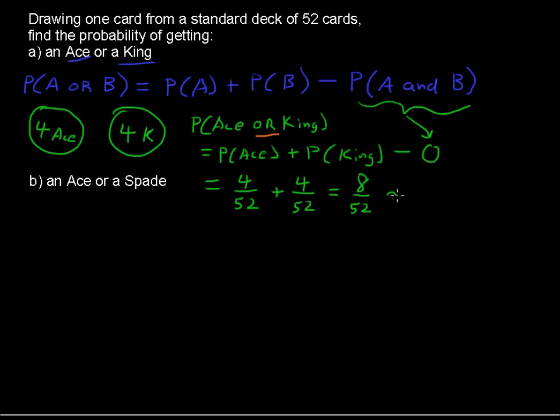Or, if you wanted to write this as a decimal, and oftentimes probability answers are written as a decimal, it's about 0.154. But it's very good to see that fraction, to see where this probability is coming from. You're adding the four aces plus the four kings, divided by the total of 52 cards in the deck.